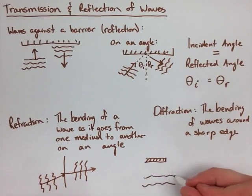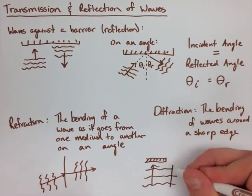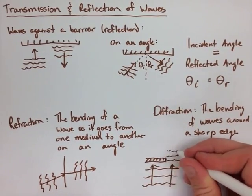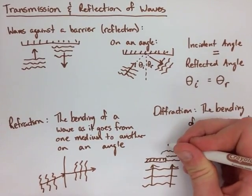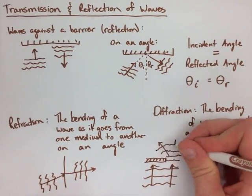What happens here is the waves continue on a straight line if they're not affected by the corner, but then the rest of the wave kind of bends around the corner.